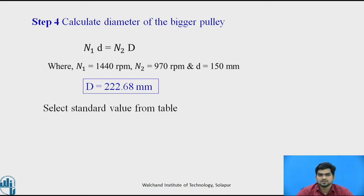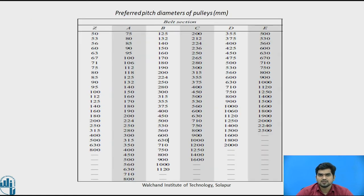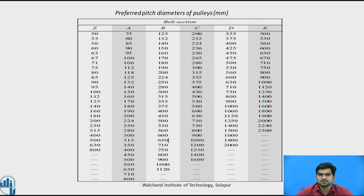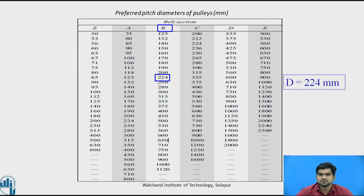We have to find the diameter of the larger pulley from the standard data book. From the catalog, since 222.68 mm is not listed in the standard table, we select the nearest standard value of 224 mm. Therefore, capital D is equal to 224 mm.